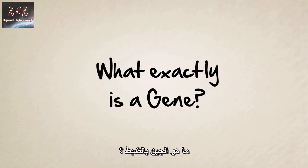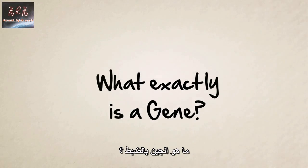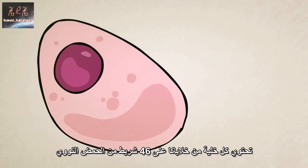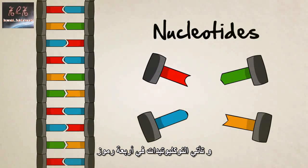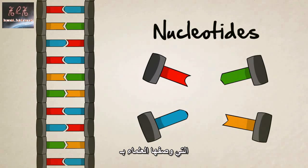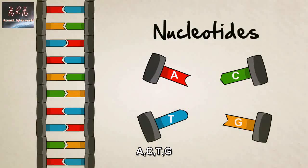What exactly is a gene? Each one of our cells contains 46 strands of DNA. A single strand is made of millions of particles called nucleotides, and these nucleotides come in four different types, which scientists have labeled A, C, T, and G.